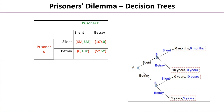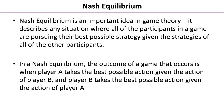Some of you, rather than using a payoff matrix, may wish to show game theory or the prisoner's dilemma as a decision tree, and you can see an example of this to the right-hand side of your screen. Nash equilibrium is an important idea in game theory. It describes any situation where all participants in a game are pursuing their best possible strategy given the strategies of the other participants. In a Nash equilibrium, player A takes the best possible action given the action of player B, and player B takes the best possible action given the action of player A. If you've got some extra time, you might want to watch the film A Beautiful Mind, where you can see this idea in action.